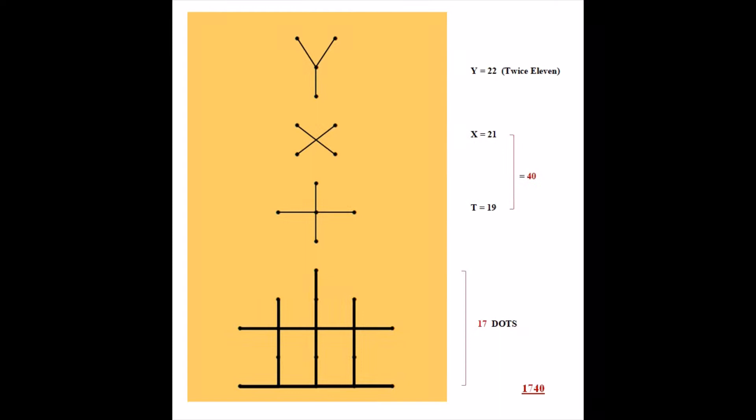Honestly, I don't know if that's the way the dots are to be interpreted. That said, there may be one more number encoded here. The numerical values of the letter shapes are Y equals 22, or twice 11, and the X and T crosses are 21 and 19, equaling 40. If we then add up the number of dots of the image below, there's 17. So we have 1740, Edward de Vere's Erlen code number, and 22, for the twice 11 brethren.